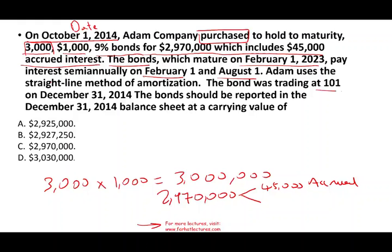The bond was trading at 101 on December 31st, 2014. The question asks: what should the bonds be reported at on December 31st, 2014 — that is, what is the carrying value, or book value, of the bond? The process of elimination is important when answering CPA questions. You should be able to eliminate at least two answer choices immediately, as long as you have a basic understanding of the problem.